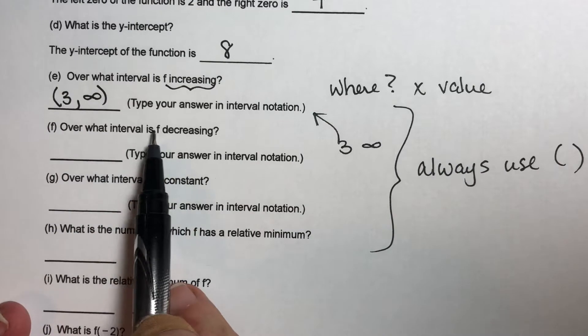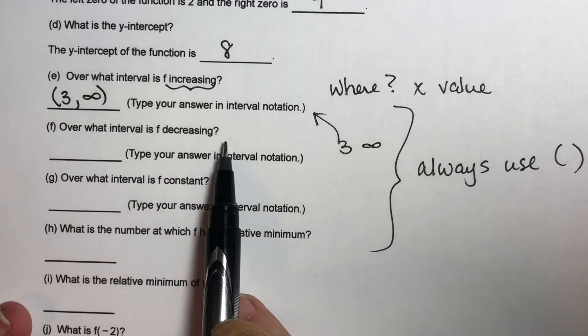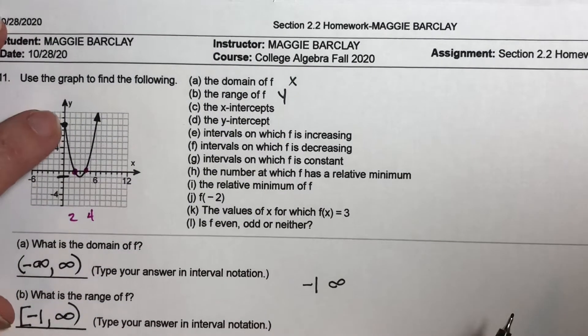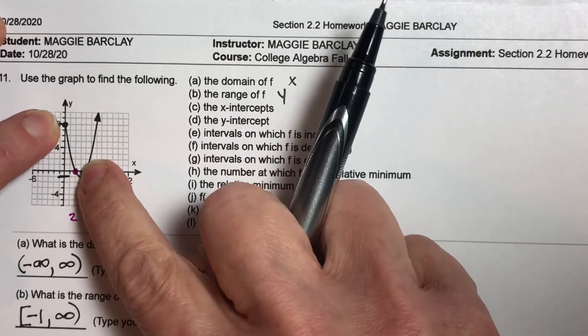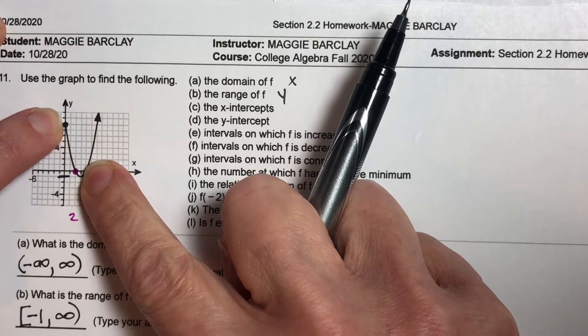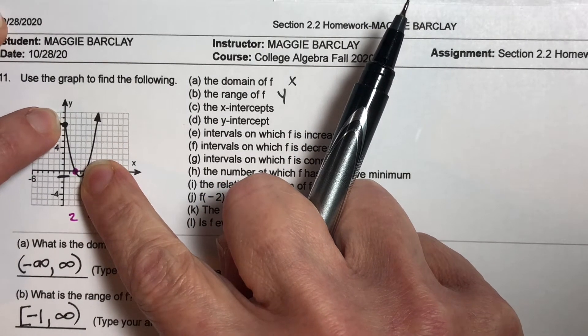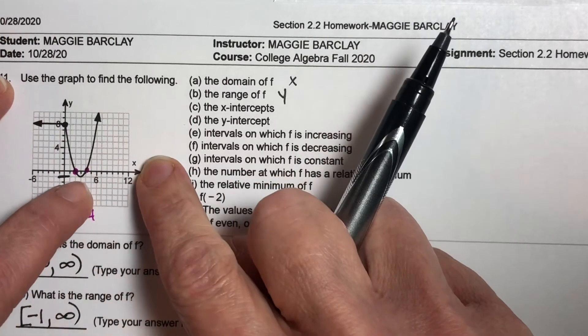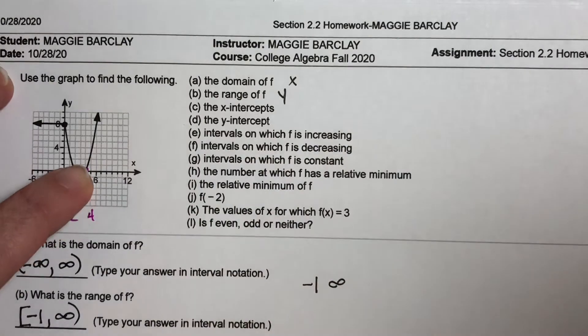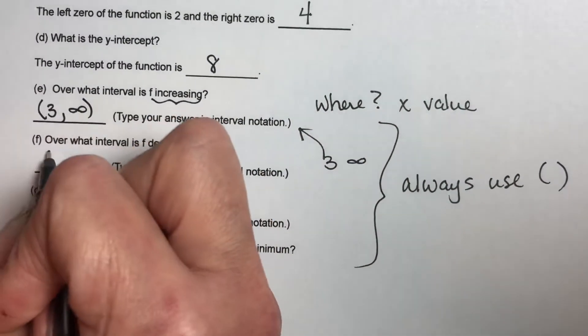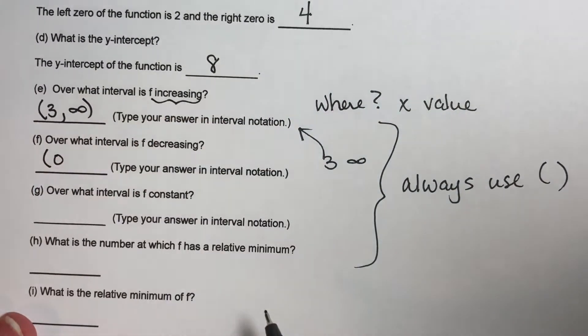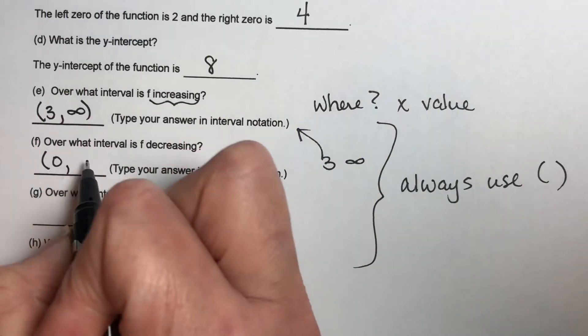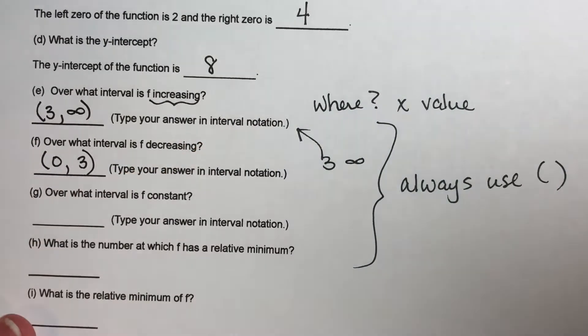Now, what interval is my graph decreasing? So where is it going down? It's going down from here to here. Now, where is that on the x-axis? It starts going down when x is 0, and it stops going down when x is 3. So it starts going down at 0 and it stops going down at 3.